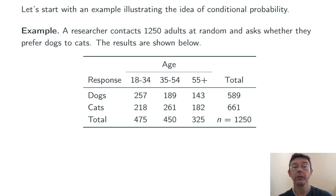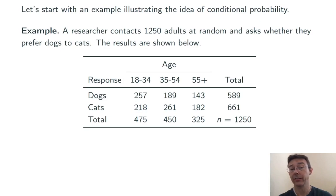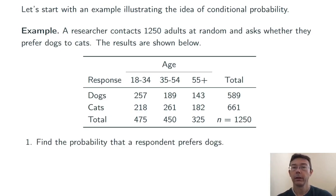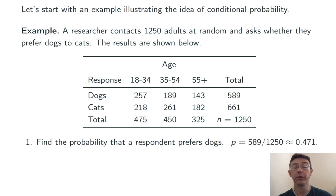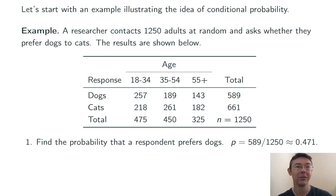In this table, we're seeing the results of a study in which a researcher contacted 1,250 adults asking each one whether they prefer dogs or cats. Let's compute the probability that a respondent selected at random from this sample prefers dogs. There are 589 people that prefer dogs out of 1,250 overall, so the probability of randomly selecting one that prefers dogs is .471 — 589 over 1,250.